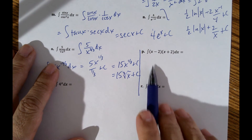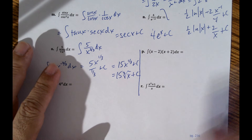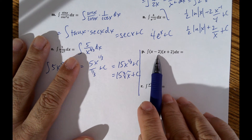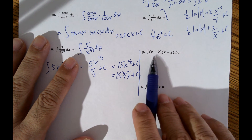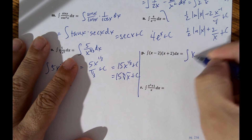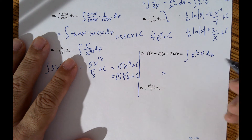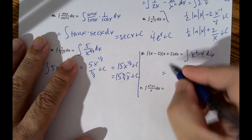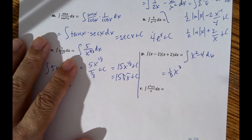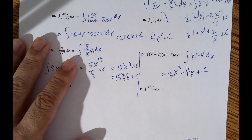Looking at example p, you might think there's a product rule — but there is no product rule for integration. So just multiply it out: that gives x squared minus 4. Then use the power rule: x cubed over 3 minus 4x plus the constant.